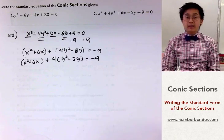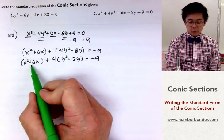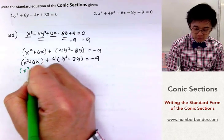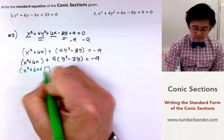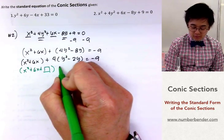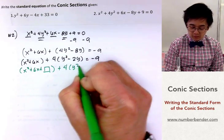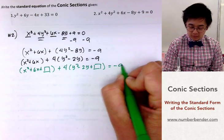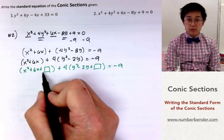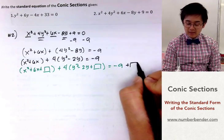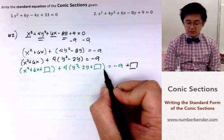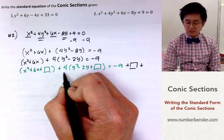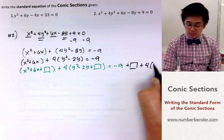Now we can complete the square for both the x group and the y group. For the x group we'll have x squared plus 6x plus a box. And for the second group we'll have 4 times y squared minus 2y plus the box equals negative 9. Since we have a box on the first group we'll add that number on this side as well. And for the second group we'll add the number that we factored out multiplied by the number in the box.